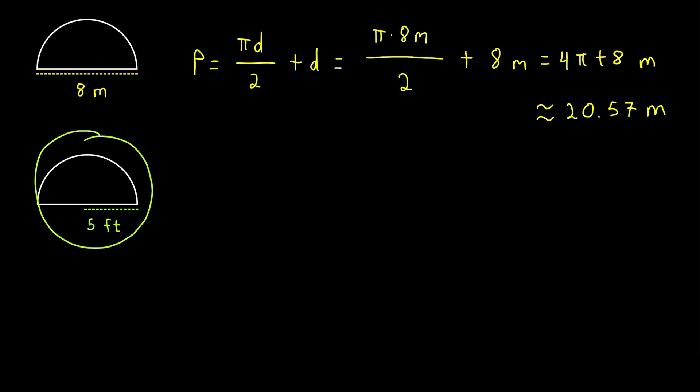And again, to find the perimeter of this semicircle, we can use this same formula. We just have to take half of the circumference of the full circle, because that's what we've got on our perimeter, but then we've also got a diameter we need to add as well.